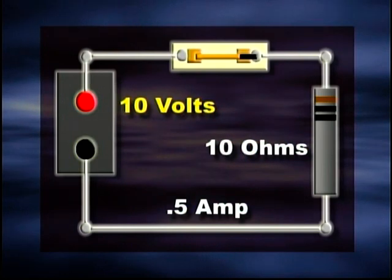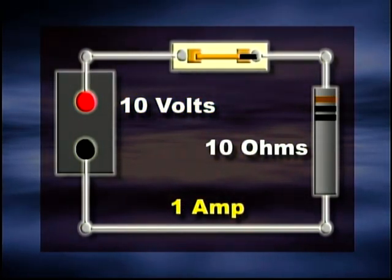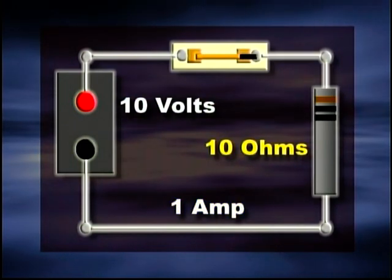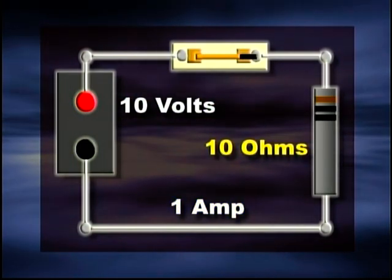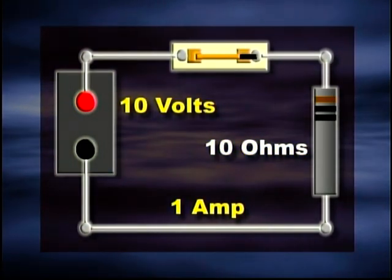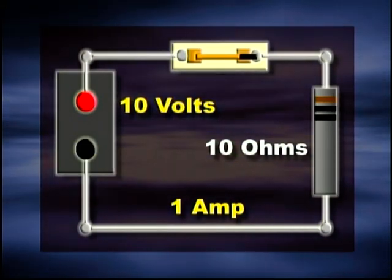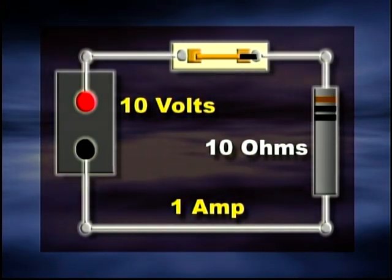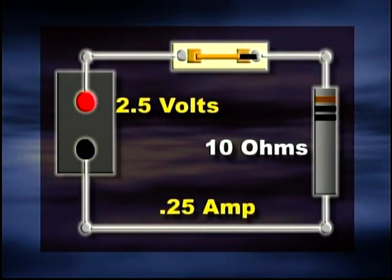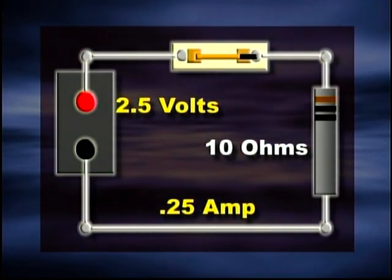When the power source is increased to 10 volts, notice that the current has increased to 1 ampere. With the resistance remaining constant in a circuit, if the voltage were doubled from 5 volts to 10 volts, the current would be doubled from 1/2 to 1 ampere. Conversely, if the voltage were decreased, the current would be decreased in proportion.